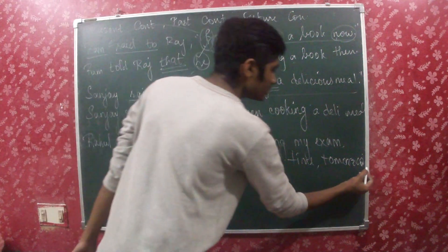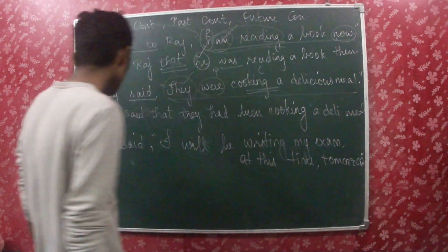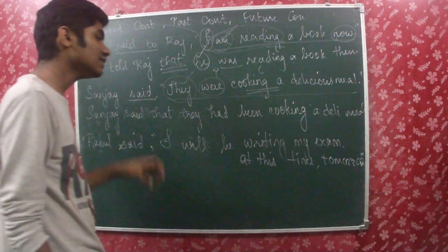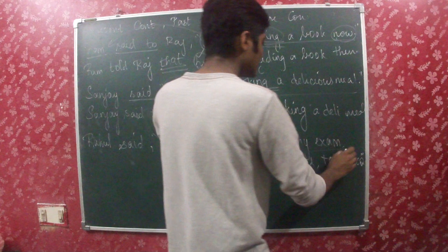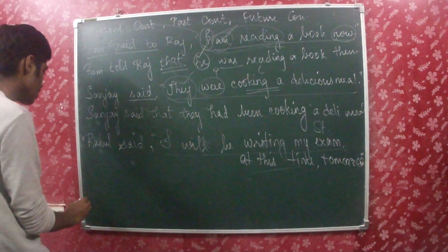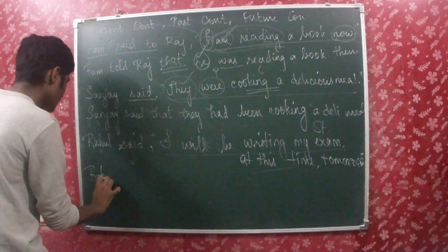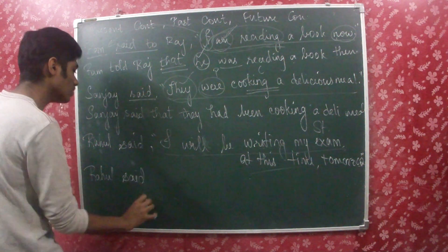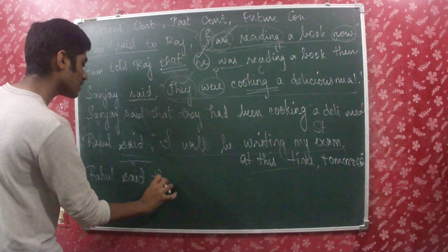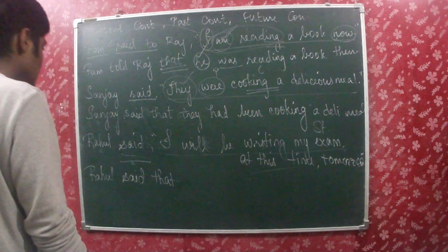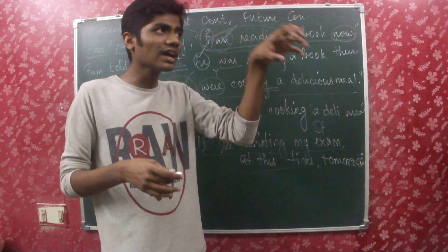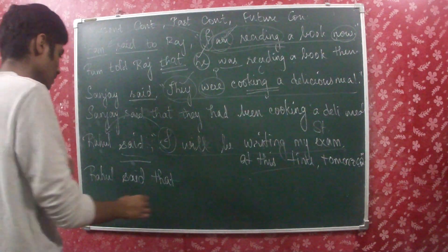The next sentence is: Rahul said, 'I will be writing my exam at this time tomorrow.' Let's look at the sentence inside the quotation — it's just a statement, so it's assertive. Go with the first row. Write the subject as it is: Rahul. The reporting verb is 'said' (not 'said to'), so write 'said'. Then write the conjunction 'that' for assertive sentences. The word 'I' refers to Rahul, so write 'he': Rahul said that he.